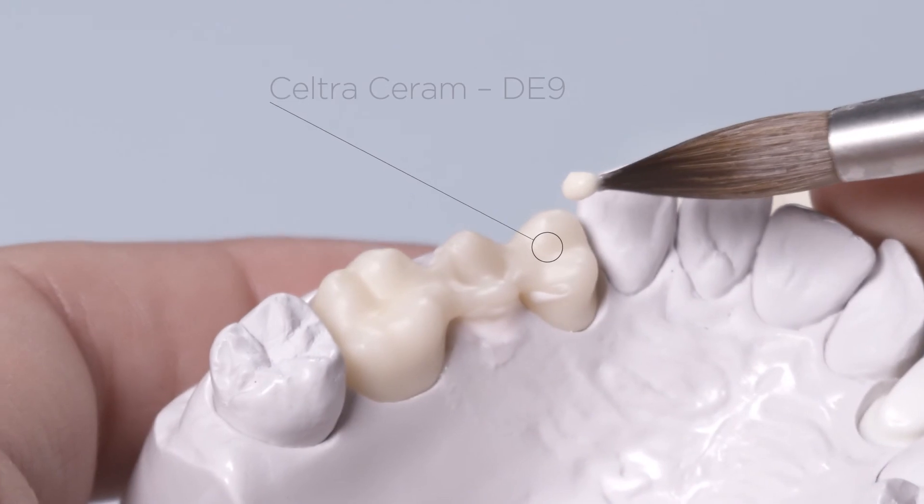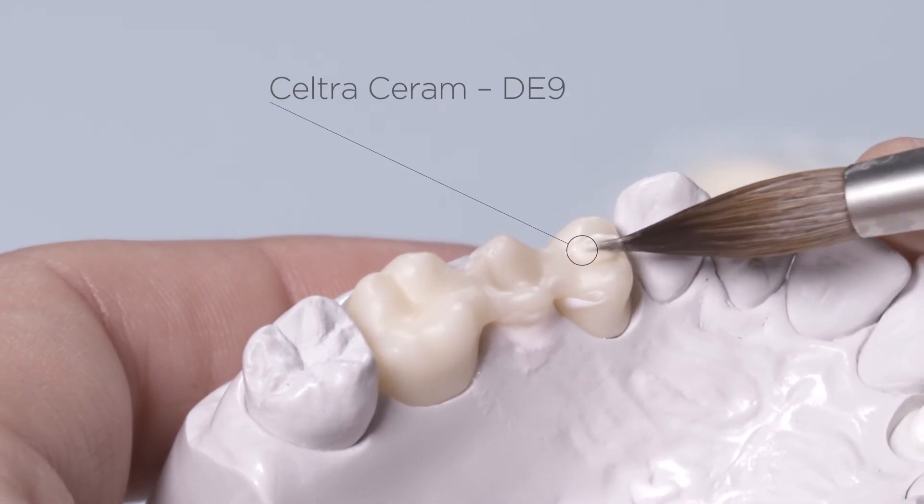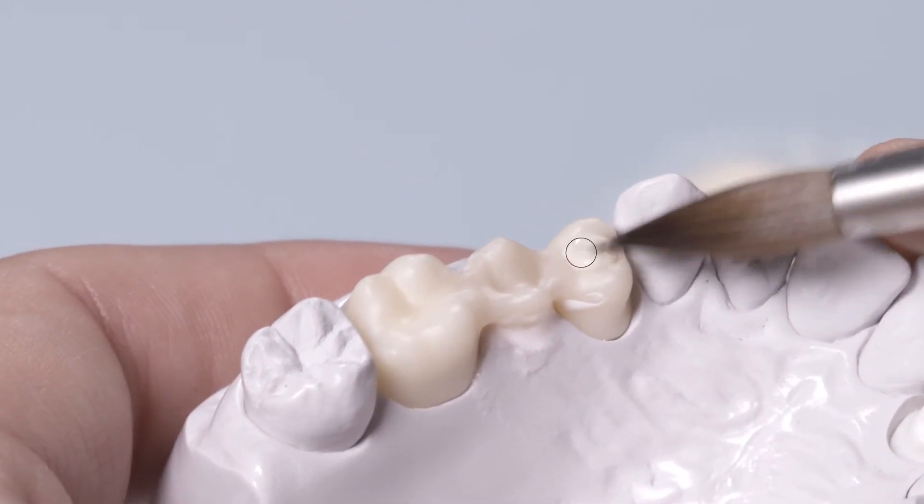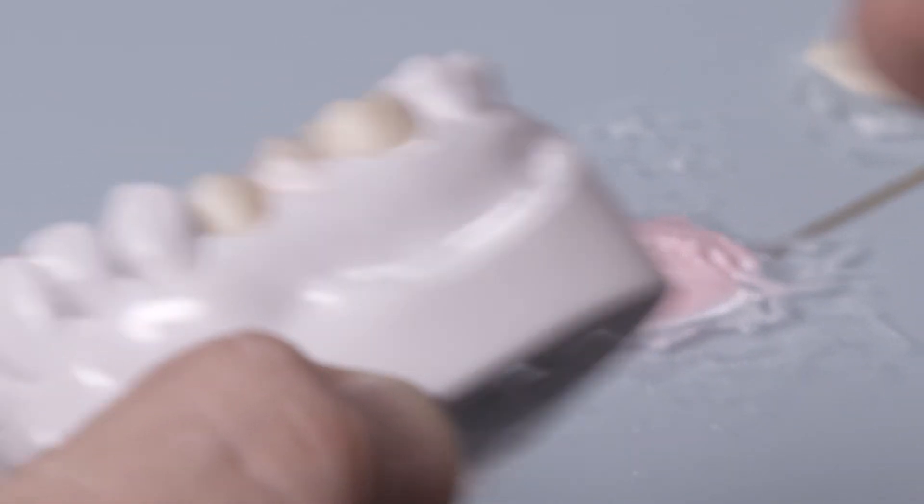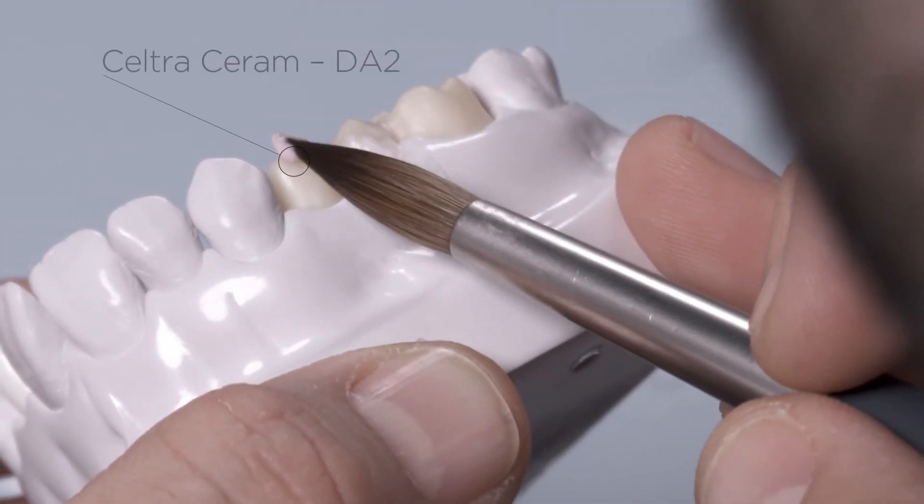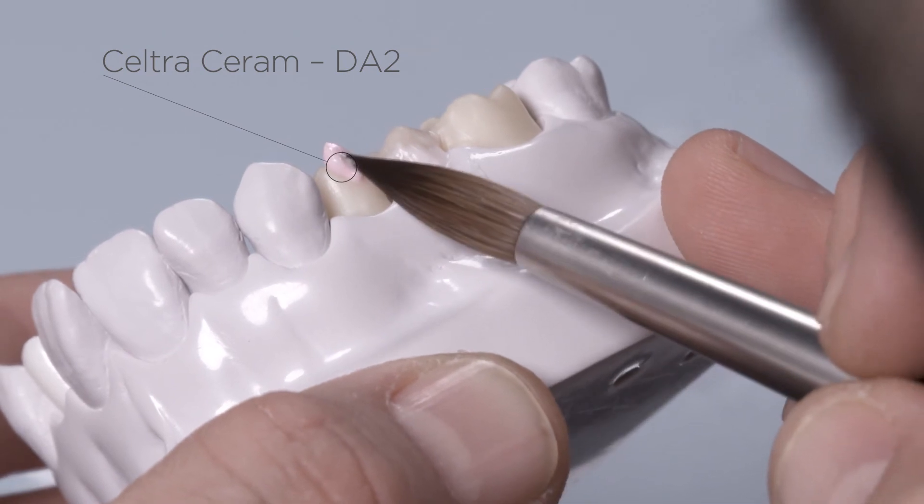Place Dentin Effect DE9 Orange in the central occlusal areas of the restoration. Then build up the buccal, labial and occlusal dentin aspects with Dentin A2.